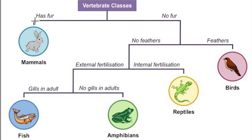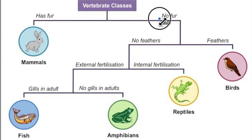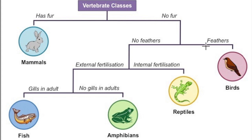What you do is go through a series of yes or no questions. For example, has it got fur or no fur? In our example, it doesn't have fur, so we go down to the next question.